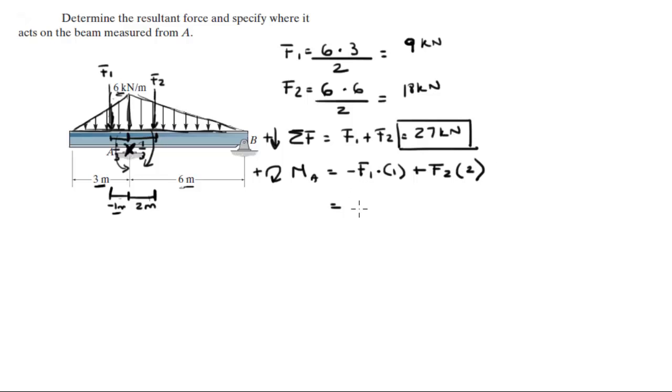So F1 is minus 9 times 1 which is minus 9, plus F2 which is 18 times 2 which is 36. So the moment comes out to be 27 kilonewton meters, moment about A going clockwise.